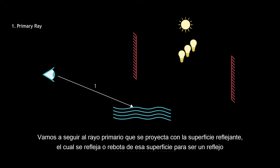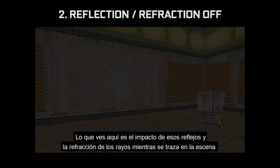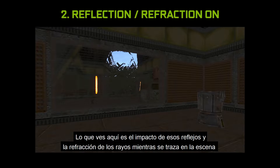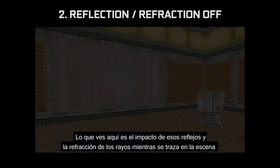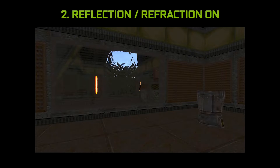We're going to follow that primary ray as it intersects with that mirrored surface. Our primary ray goes through that surface refracting, or bouncing off that surface, which would be reflection. What you see here is the impact of those reflection and refraction rays being traced in the scene. The reflection is showing something behind the camera, and the refraction is showing that warped or distorted part of that mirrored surface.